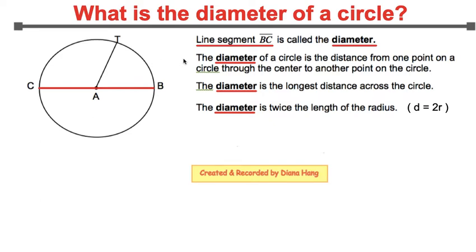Now, a diameter of a circle is the distance from one point on a circle through the center to another point on the circle. Such as, if I start at point B and I extend through the middle of my circle, point A, continuing to extend to the other side of the circle and ending at point C, this length, line segment BC, is called a diameter.